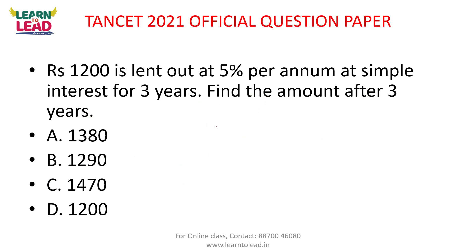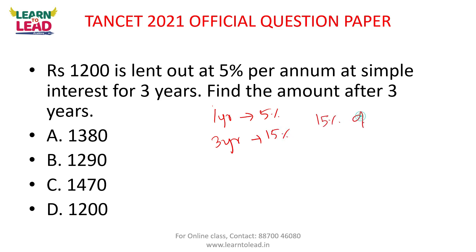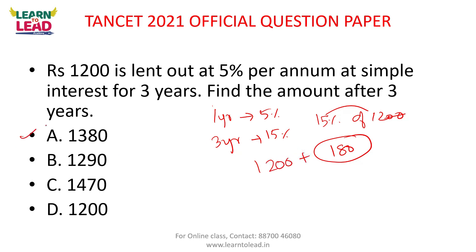1200 is lent out at 5% per annum at simple interest for 3 years. Find the amount after 3 years. Our formula is PNR/100. For 1 year, rate of interest is 5%. For 3 years: 3 × 5 = 15%. 15% of 1200 — zero cancels — 15 × 12 = 180. Principle 1200 + 180 = 1380 is the answer.